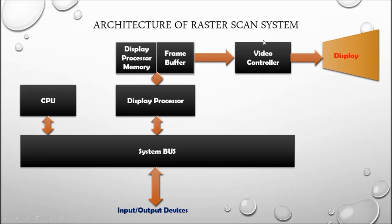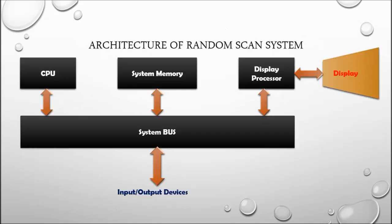With respect to raster scan, there are some changes in the random scan display. This is the architecture of the random scan display. Some parts are common, like CPU, system bus, and system memory. Here, a display processor is available which is connected to the display device.